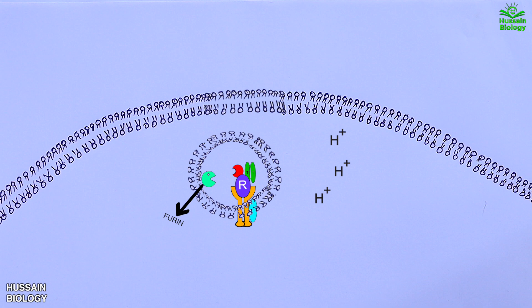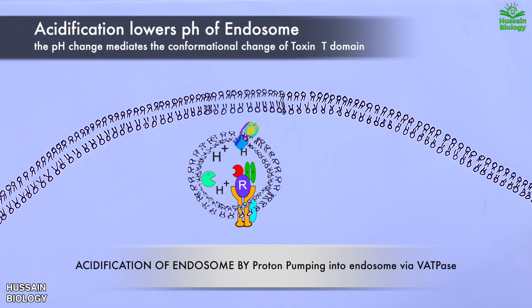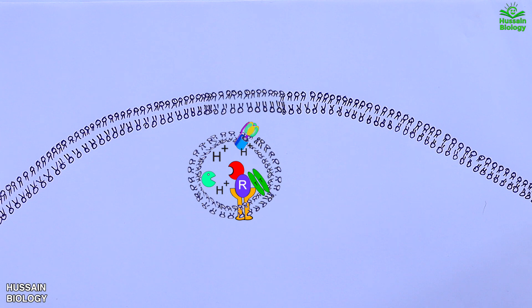Acidification takes place where V-ATPase pumps protons into the endosome, thereby lowering the pH. Upon acidification, the transmembrane domain of the toxin, the T domain, undergoes spontaneous dynamic reorganization and inserts into the membrane, forming a pore. Then furin cleaves the C domain.